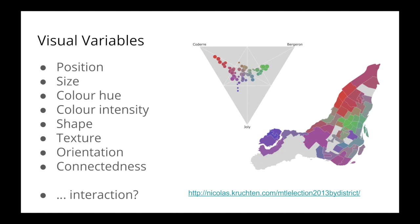Various researchers in data visualization have agreed on the visual variables that humans are capable of processing and reasoning about. Anytime you're making any kind of data visualization, you're making marks on a screen or on a piece of paper. These marks have attributes: position, size, color hue, color intensity, shape, texture, orientation, and whether they are touching each other or connected in some way.